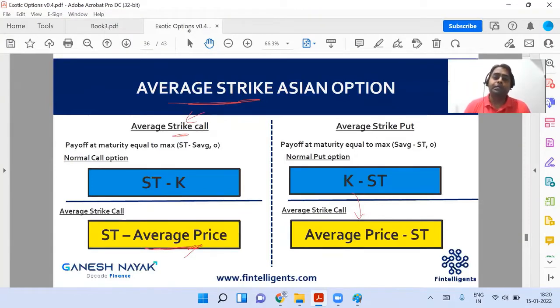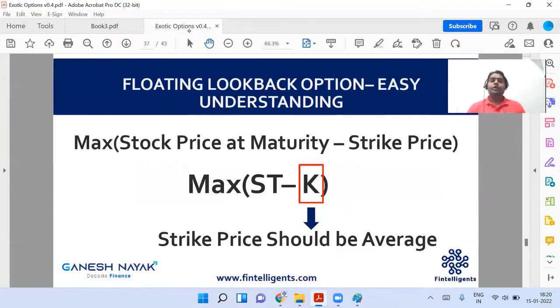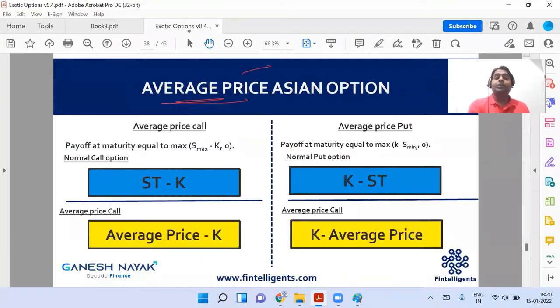Similarly, over here, in place of K it's going to be average price. So the strike will become an average price because the name is average strike. If I take you towards the second example, which the name is average price, now basically that means the average price will be at the ST position. This is very simple, actually. You don't need to remember anything. By looking at the name itself, you can understand what should be the basic structure, what should be the structure of this option.